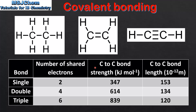Next we'll look at the carbon to carbon bond strength. In this column we have the bond enthalpy, which is the energy required to break 1 mole of bonds in a gaseous molecule. The energy required increases as we go from a single to a double to a triple covalent bond. So triple covalent bonds are stronger than double covalent bonds, which are stronger than single covalent bonds.